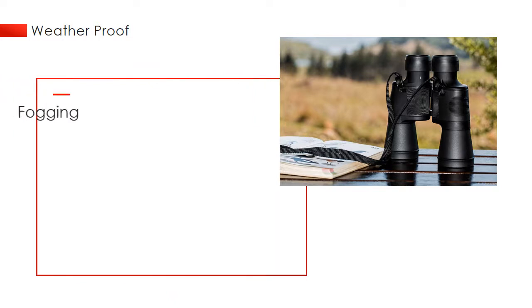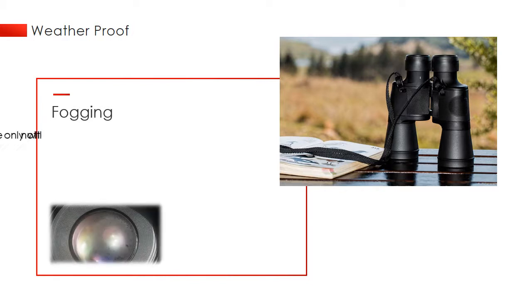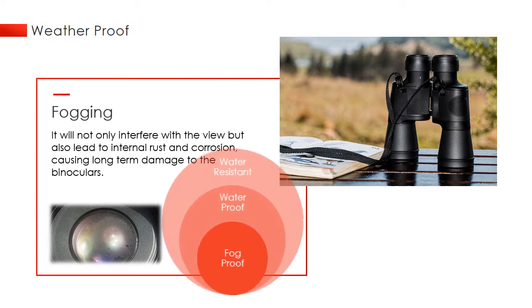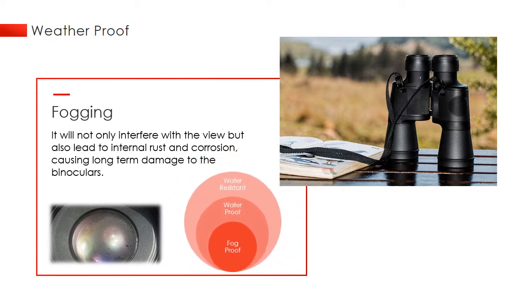Fogging will not only interfere with the view but also lead to internal rust and corrosion. Some binoculars are water resistant, while better ones have O-ring seals to be waterproof. The best fog proof binoculars are filled with dry inert gases such as nitrogen to keep the optical tube sealed firmly in place.